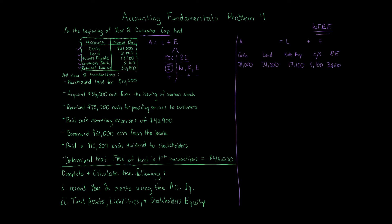Now we're going to go through the transactions. The idea is to record Year 2 events using the accounting equation — going through each line item using the beginning balances. Those beginning balances get affected, and at the end we'll calculate total assets, liabilities, and stockholders' equity. A horizontal analysis shows how each item affects the accounting equation — accounts can go up or down. We'll use parentheses if a value is going down. Let's look at the first transaction.